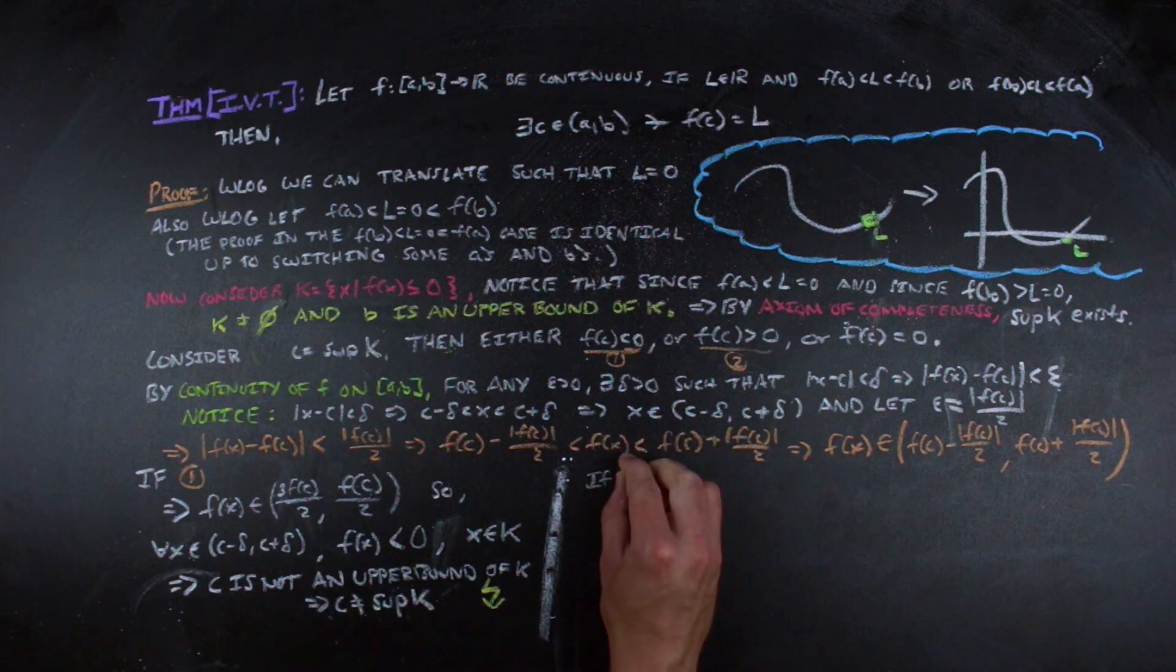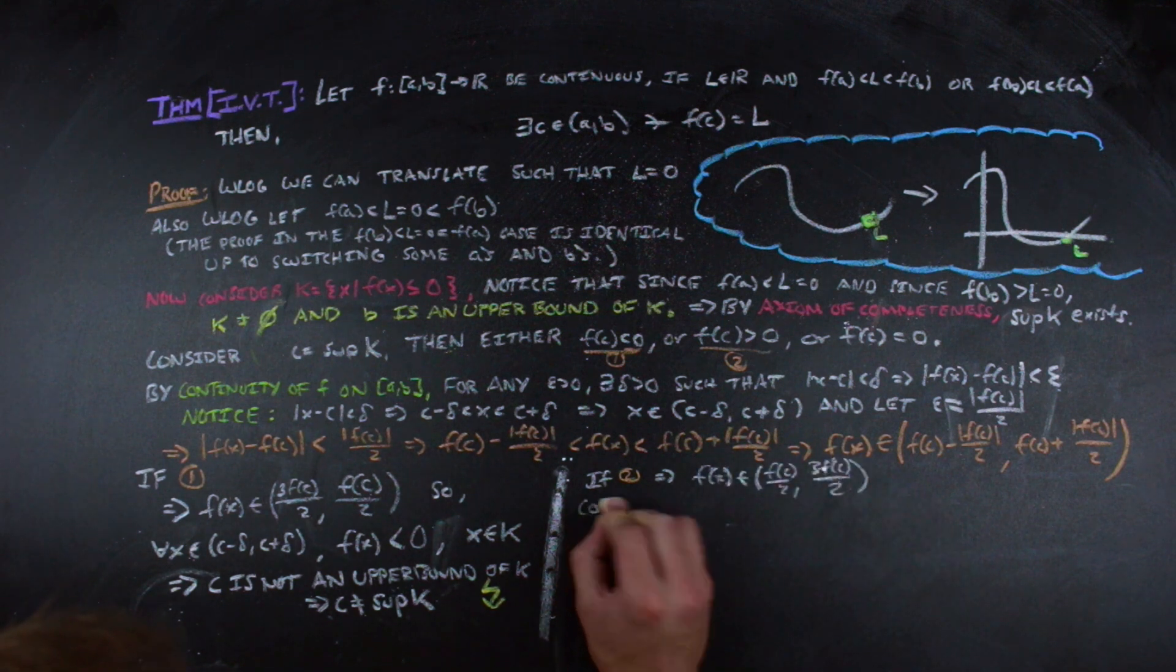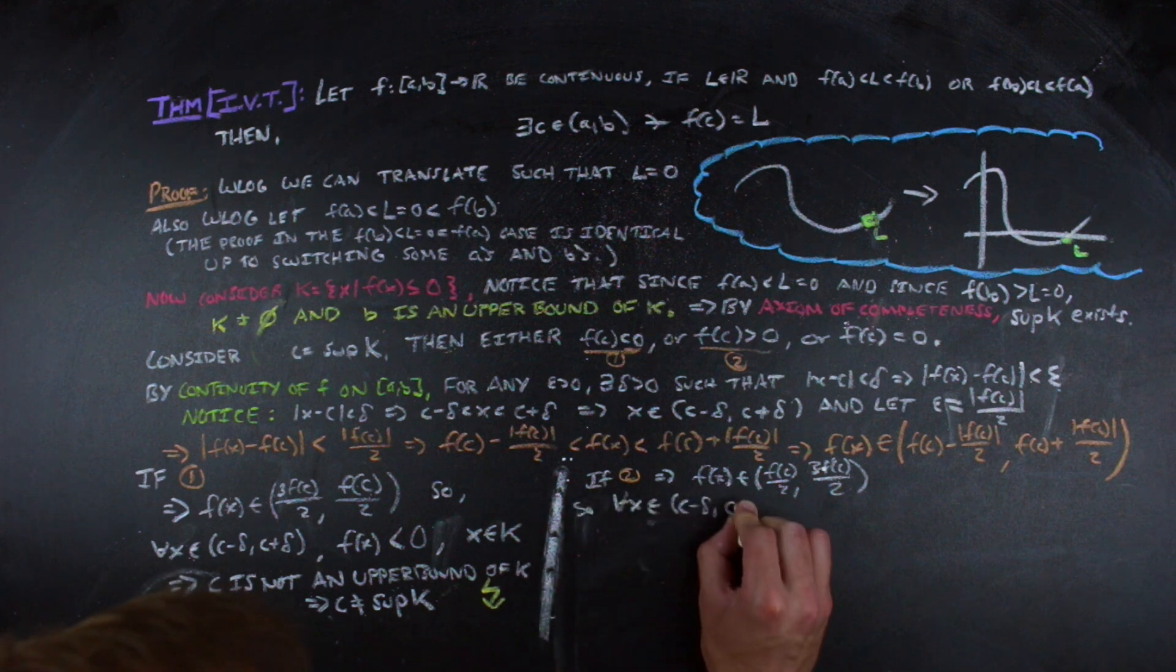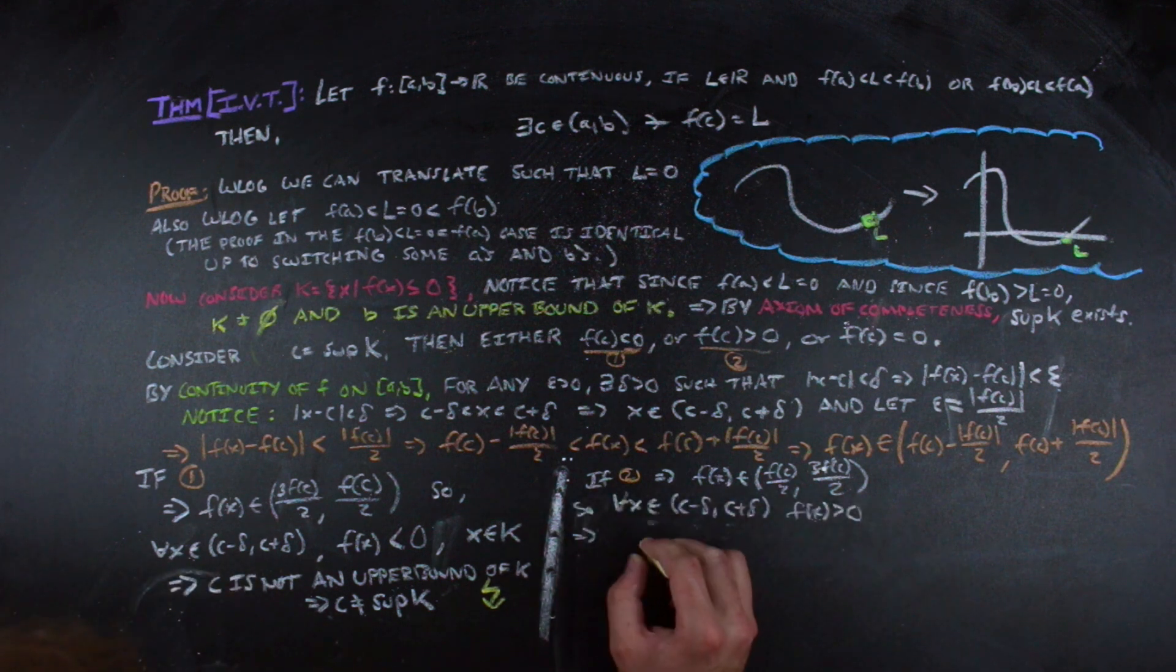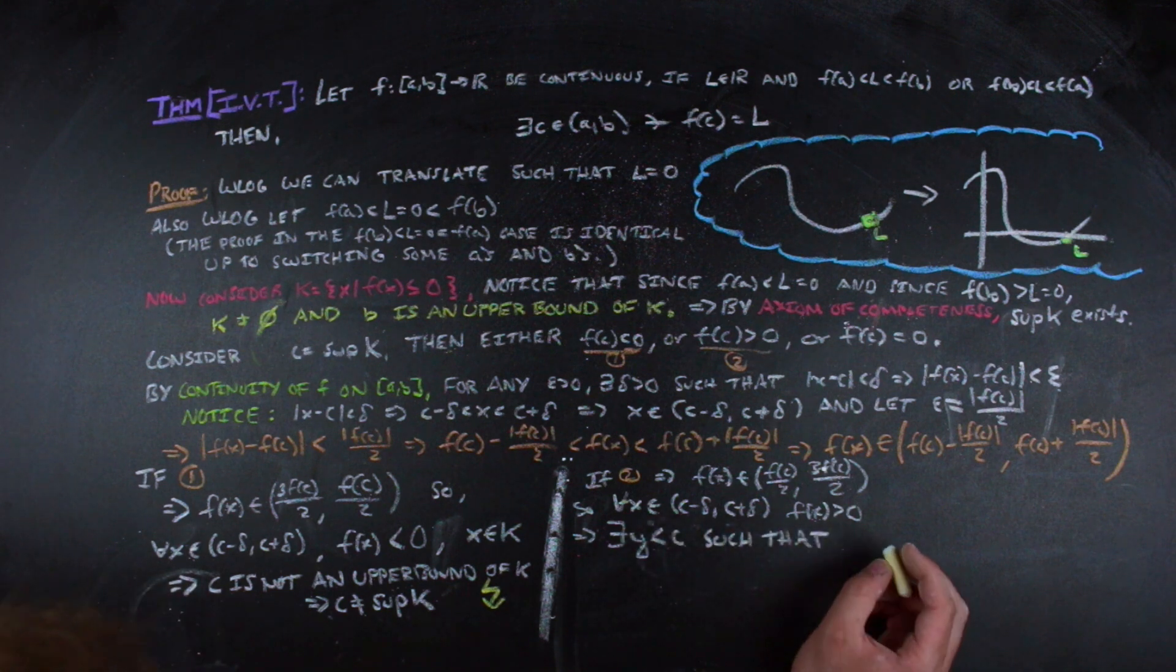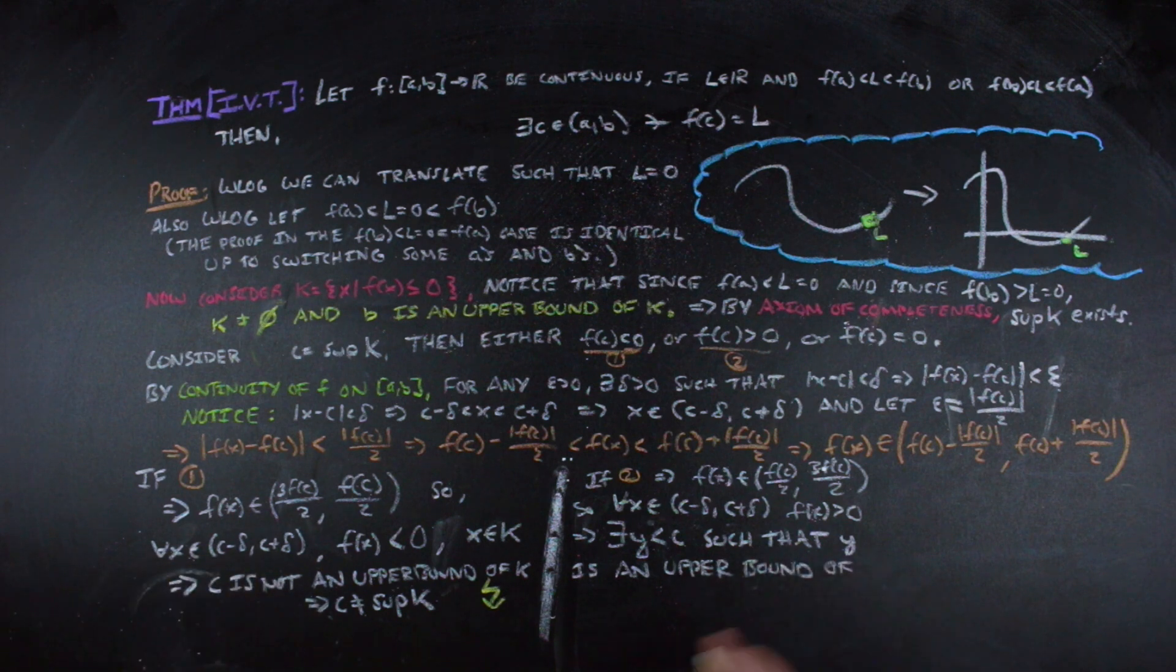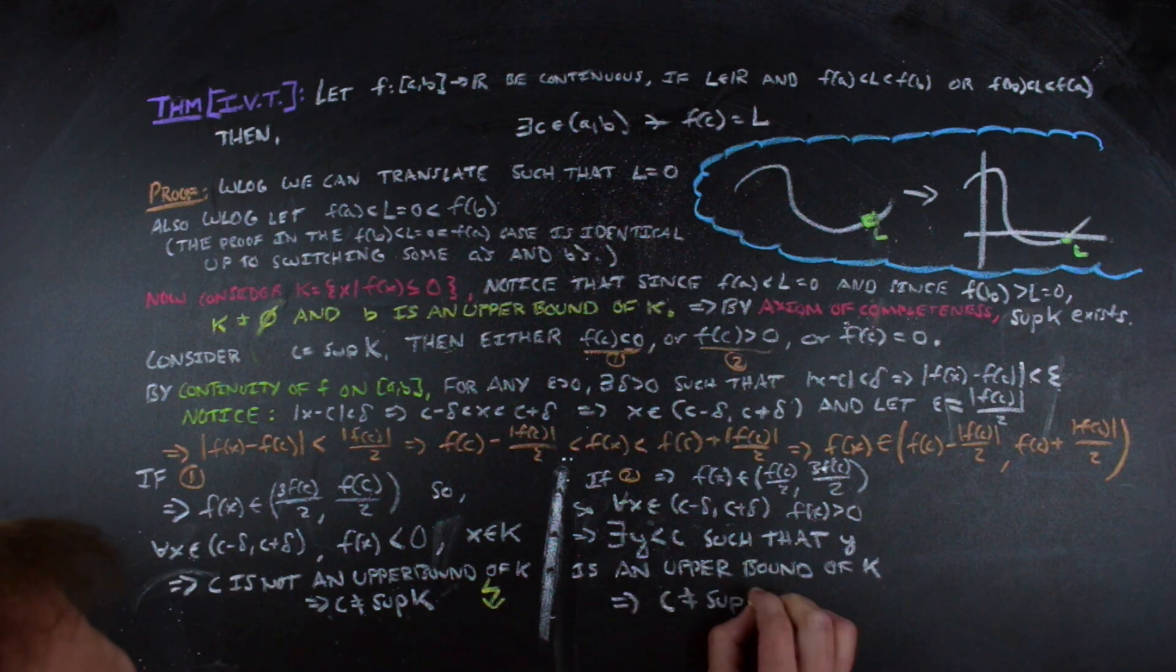When f(c) is greater than 0, we get this containment, which looks very similar to the other case but it's not identical to it, which tells us that for every x within delta of c, f(x) is greater than 0. So there is another upper bound of K that is less than c. So c cannot be the least upper bound, which is what we defined it to be. So we have yet another contradiction.